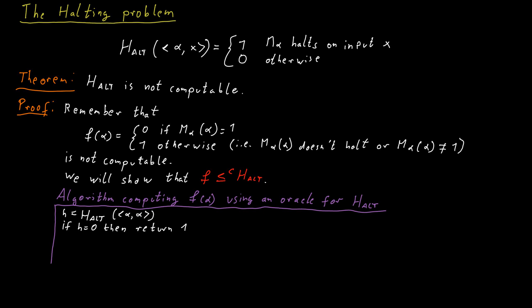On the other hand, if the answer is yes, M_alpha does halt on input alpha, then we can just run that machine. We can simulate this machine M_alpha on this input alpha. So we just do that, we simulate machine M_alpha on input alpha.